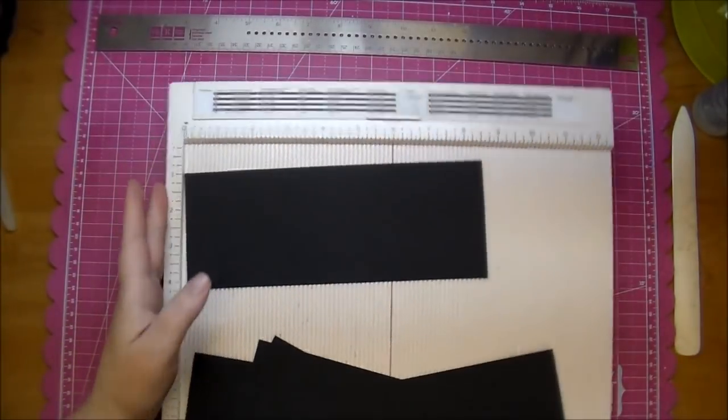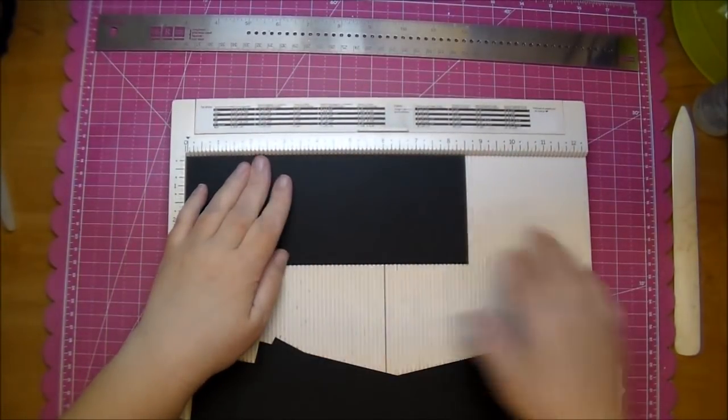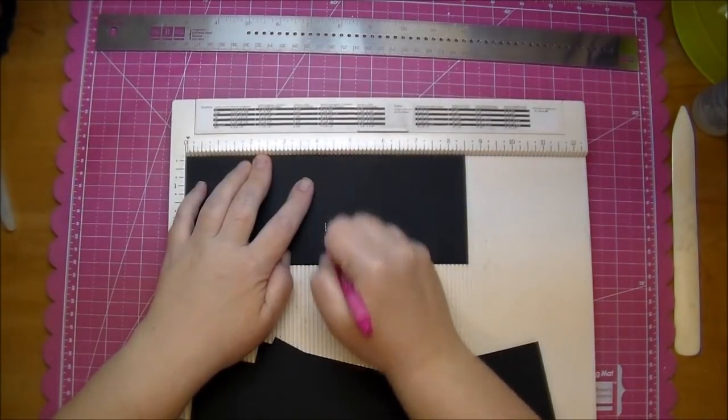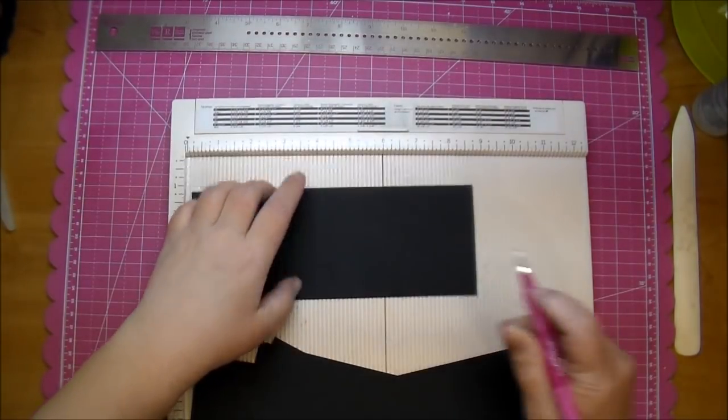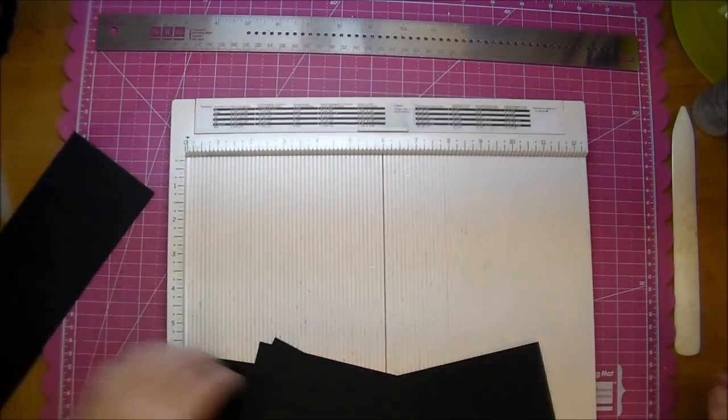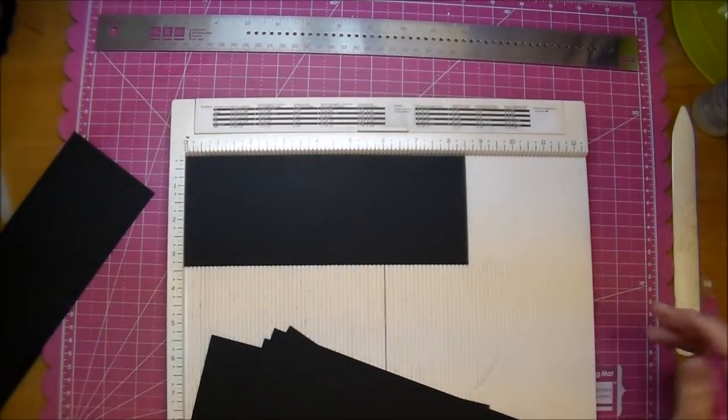And on the 8 1⁄2 inch side, we want to score this in half, so we will score it at 4 1⁄4. So I will continue doing that for all of my pieces, and I'll be right back.